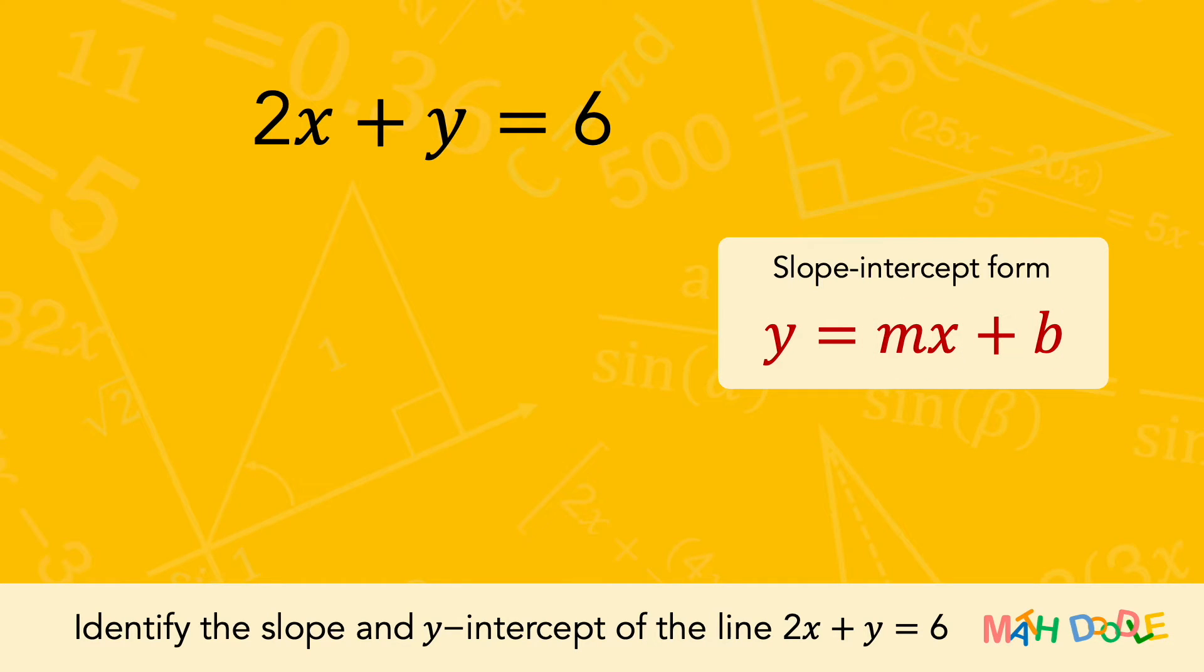So, to find the slope and y-intercept of the equation, we are going to first solve the equation for y. To do this, we are going to eliminate 2x on the left side by subtracting 2x.